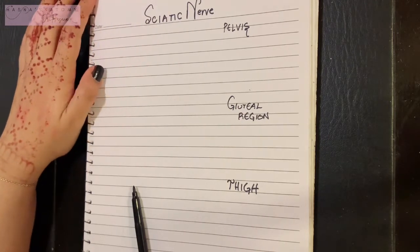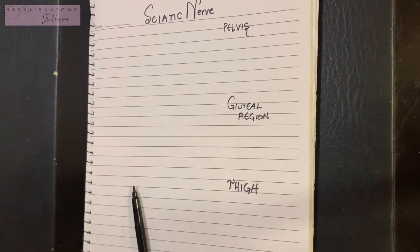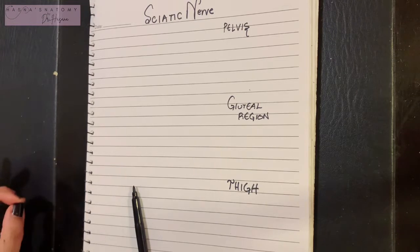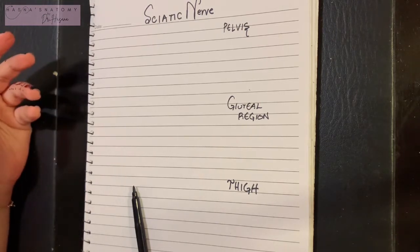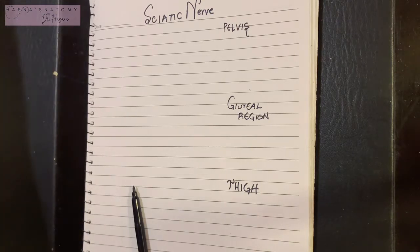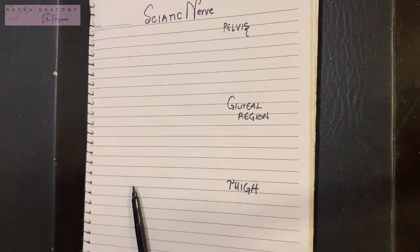The sciatic nerve is quite important because it is a very large nerve. Today I'll talk about its origin, course, and termination in the easiest way possible to clear all of your doubts, as sciatic nerve can be quite a difficult topic. I have simplified how to study and learn sciatic nerve.